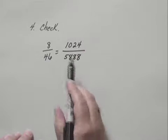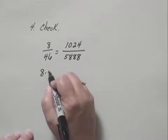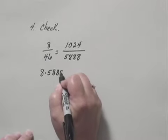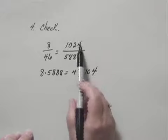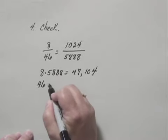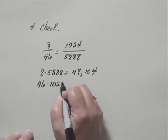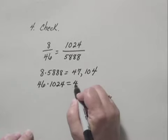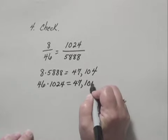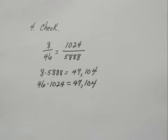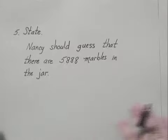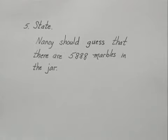If we calculate this cross product, 8 times 5,888, we get 47,104. If we calculate this cross product, 46 times 1024, that also equals 47,104. The cross products are the same, so the answer checks. And we state our answer that Nancy should guess that there are 5,888 marbles in the jar.